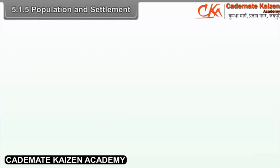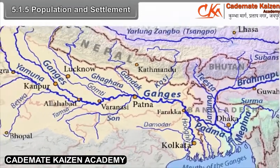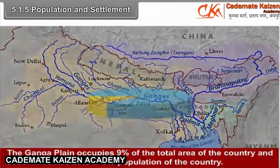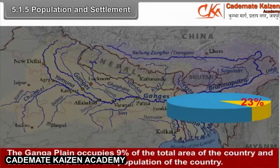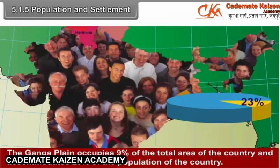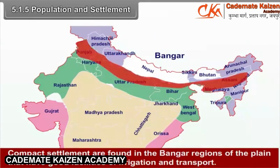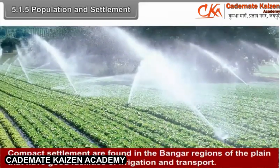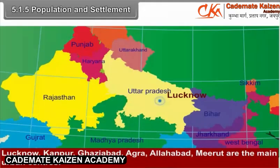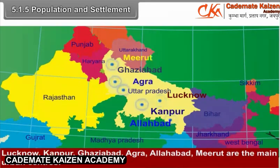5.1.5 Population and Settlement. The Ganga Plain occupies 9% of the total area of the country and accommodates 23% of the population. The average density of the plain is 931 persons per square kilometer. In the upper Ganga Plain, more than 1000 persons per square kilometer is observed in many districts. Compact settlements are found in the Bhangar regions with good irrigation and transport facilities. Lucknow, Kanpur, Ghaziabad, Agra, Allahabad and Meerut are the main urban centers. Agra is a historical city.